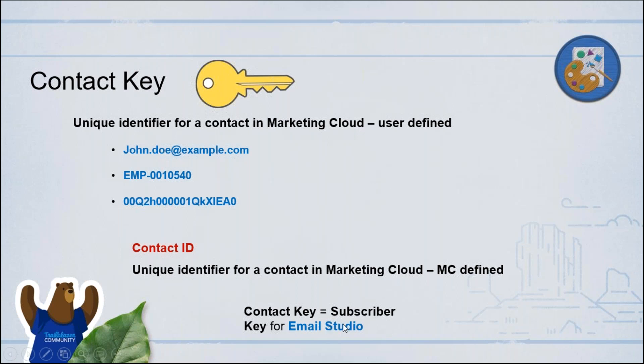When you come to Email Studio, note that the contact key is the subscriber key — they're used interchangeably. But outside Email Studio, we always refer to that primary identifier for a contact as the contact key. When you go through documentation or videos or blogs, you might come across these two terms and get confused. It's the same thing — just that in the context of Email Studio, the unique identifier called the contact key is called the subscriber key.